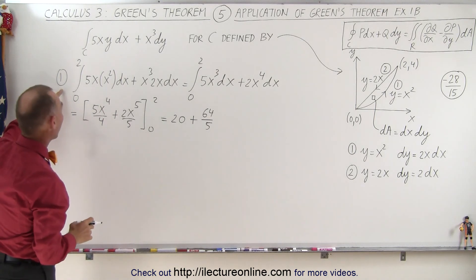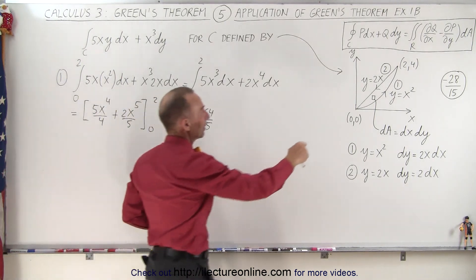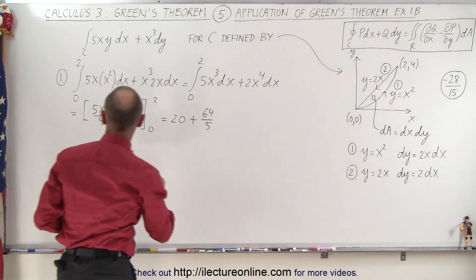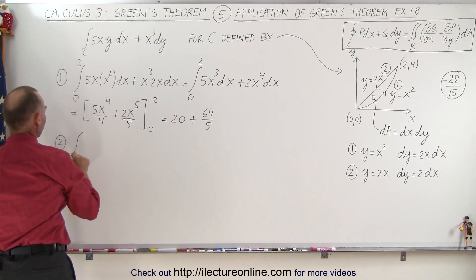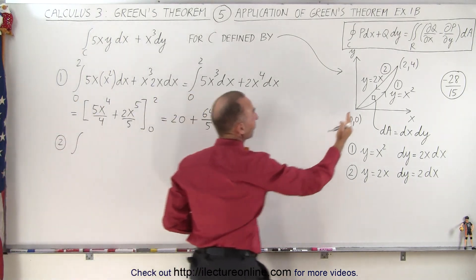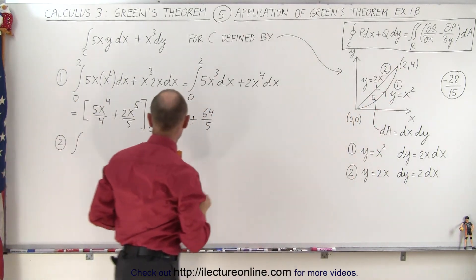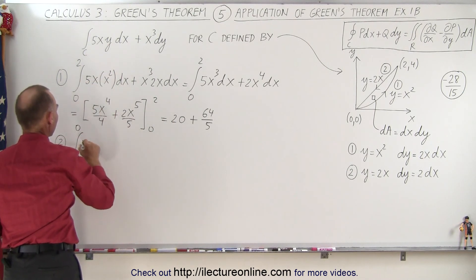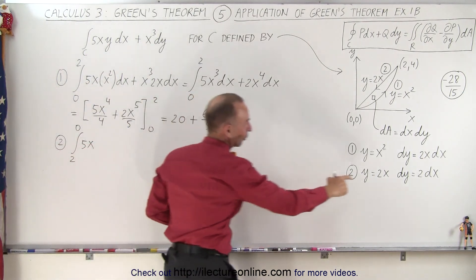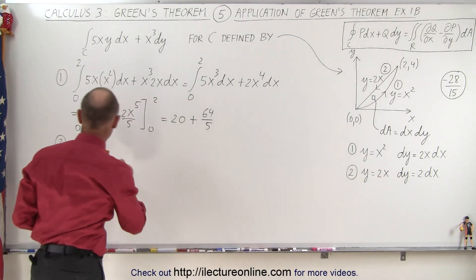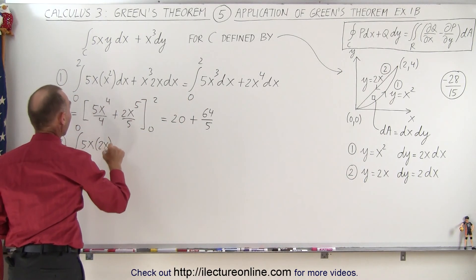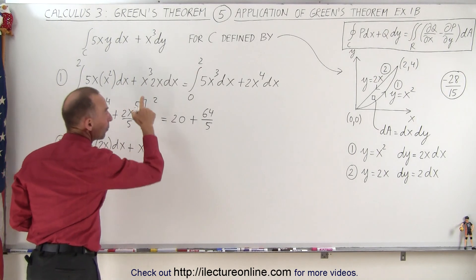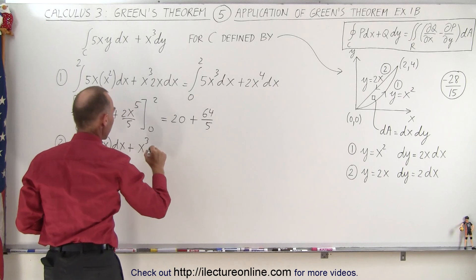Now we're going to come back, second integral will be the integral from, now the limits are going to be from 2 to 0. We have 5x, y on the second curve is going to be equal to 2x. And we have dx plus x cubed times dy, and dy is going to be 2dx.